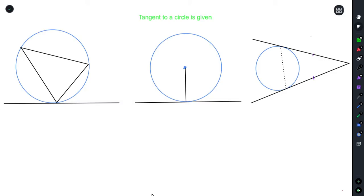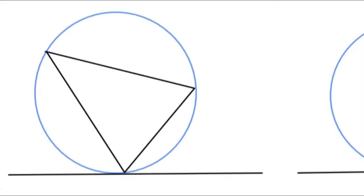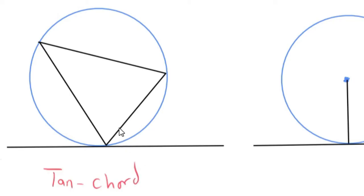...it normally falls within one of these three theorems. We understand for the first theorem over here, this is the tan chord theorem, whereby this angle over here should be equal to that angle over there.